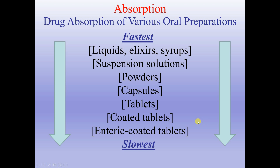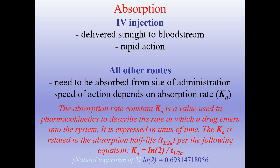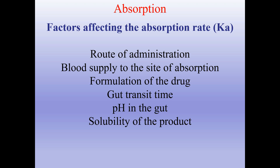For the drug to be effective it must be absorbed, except topical and IV injection, because IV injection is delivered straight to the bloodstream and has rapid action. All other routes need to be absorbed from the site of administration. The speed of action depends on the absorption rate. The absorption rate constant describes the rate at which a drug enters the system, expressed in units of time, and is related to the absorption half-life. Factors affecting the absorption rate include: route of administration, blood supply to the site of absorption, formulation of the drug, gut transit time, pH in the gut, and solubility of the product.